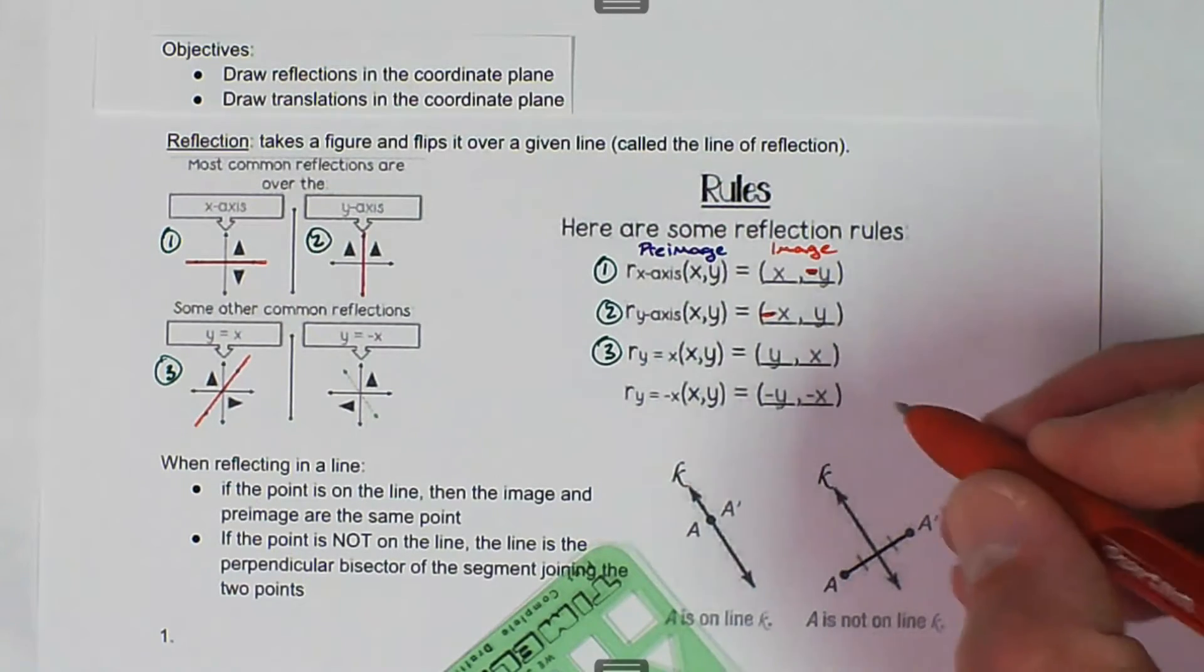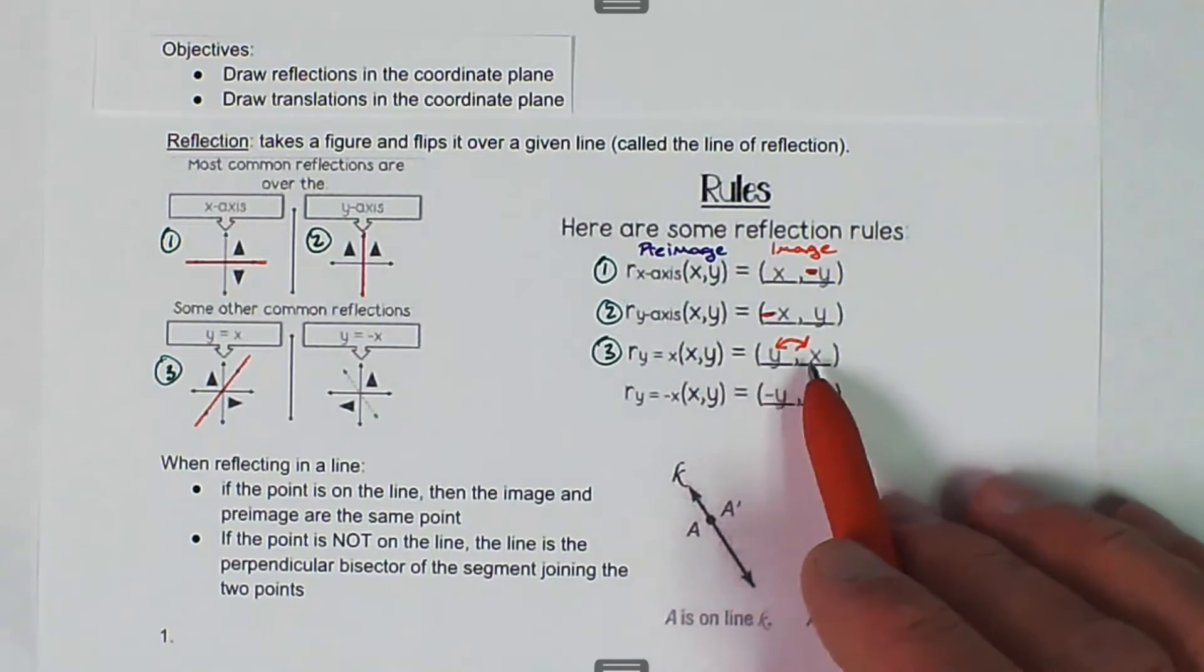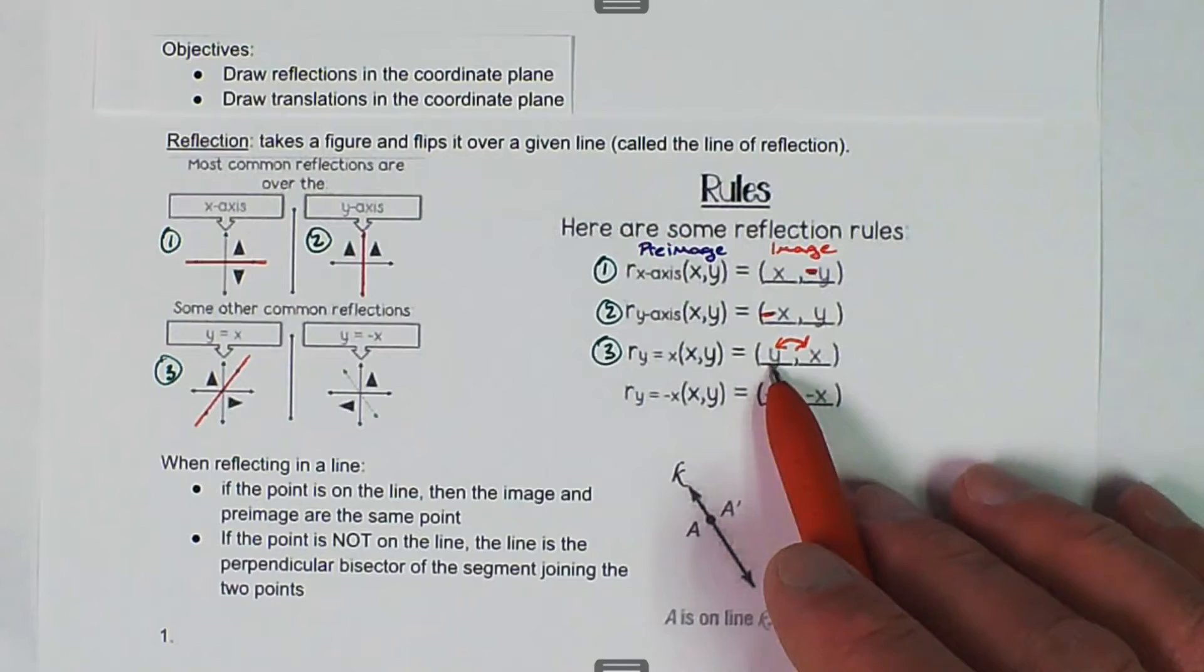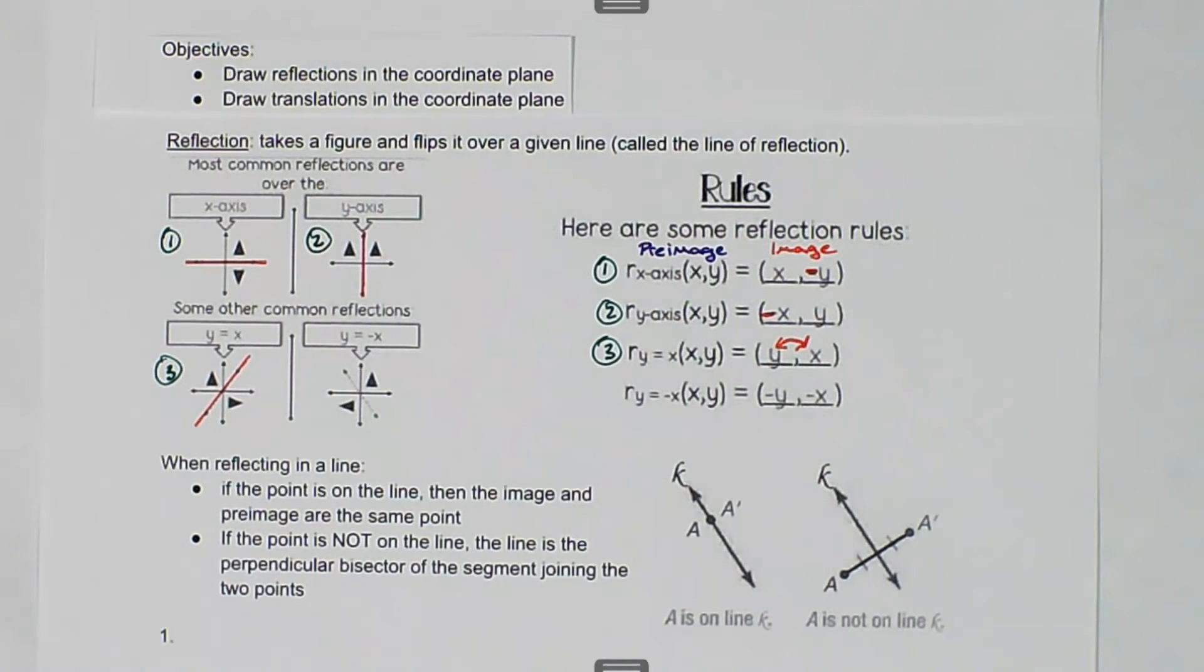Basically we take our x values, our x and y coordinates, and we switch the locations. When we graph it, we still graph it as x first, but it should be flipped there, and we'll see some examples.